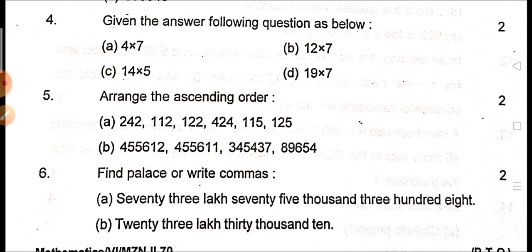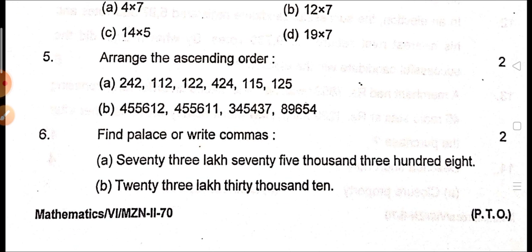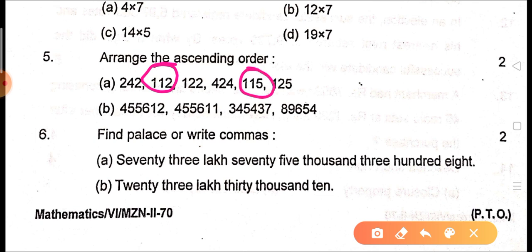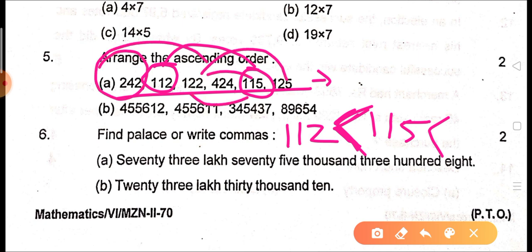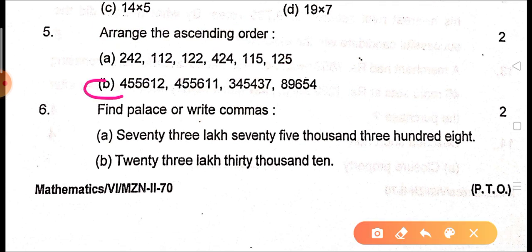Next: arrange in ascending order. You need to write the smallest number first, then greater, and in the last the greatest. The smallest number is 112, so ascending order will be: 112, 115, 122, 125, 242, and finally 424. Use the less-than arrow symbol between numbers to show the sequence.